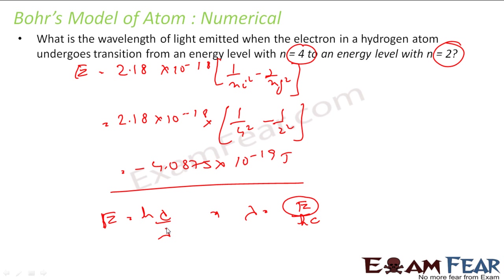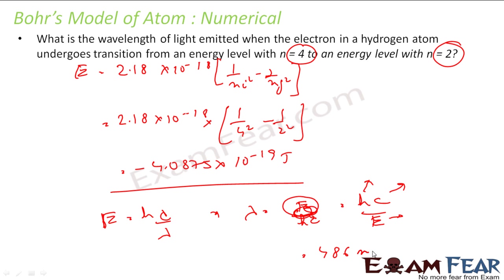Lambda is hc by E. h I know, c I know — speed of light — and E I know, it is already found. The value you get is 4686 nanometers as the answer.